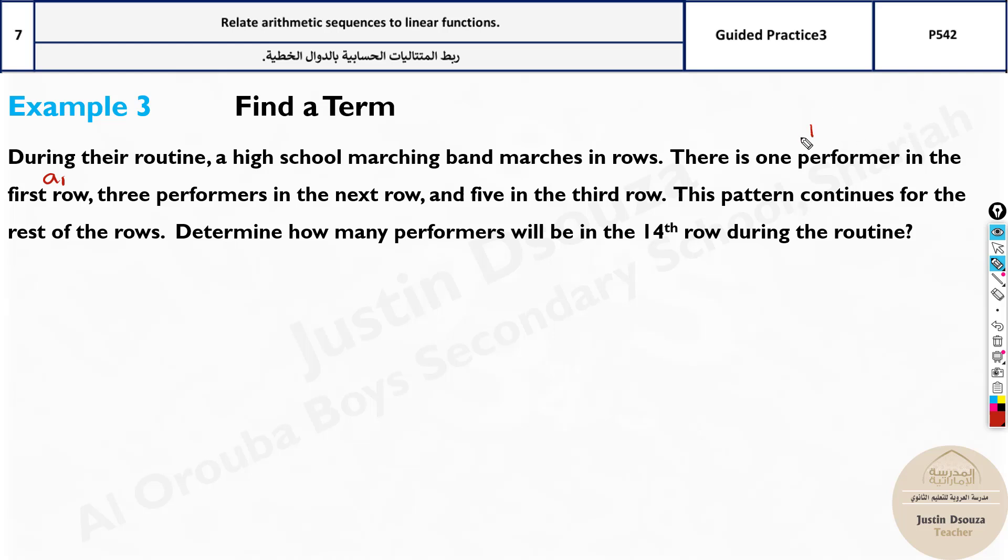First row, it is 1. A1 is 1. Three performers in the second row, that will be a2 equals 3. And 5 in the third row, a3 is 5. This pattern continues for the rest of the rows. Determine how many performers will be there in the 14th row.